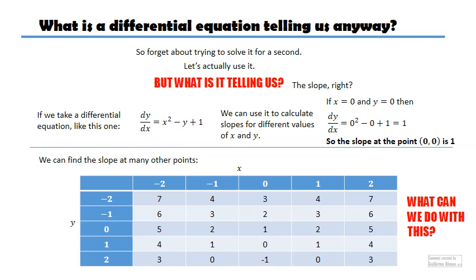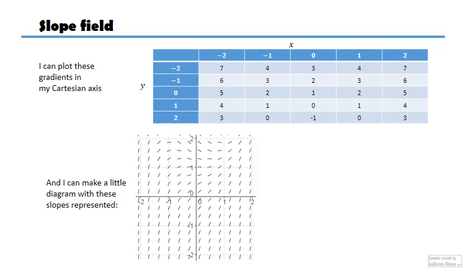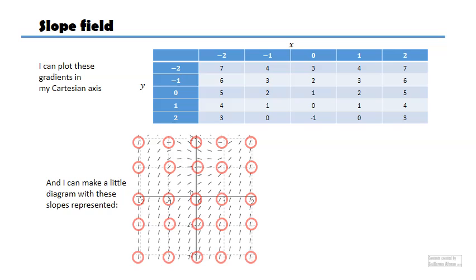So what do I do with that? I can actually do the following graph. This graph — I did this with a program, so there are actually many more points where the slope is represented. For example, at (-1, 1) we said the slope would be 1 and here you have a line with that slope. At (0, 1) the slope is 0, and indeed you can see that in all those points. At (-2, -2) the slope is 7 and as you go up the slope gets slightly flatter. So what I'm going to be able to do with this is draw a few lines using this slope field idea.